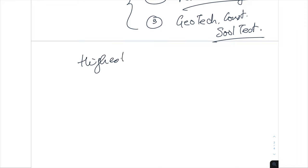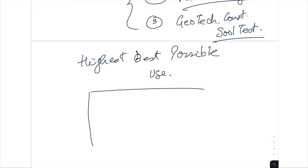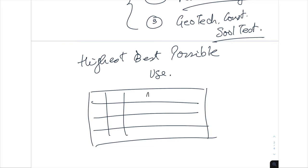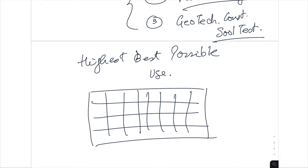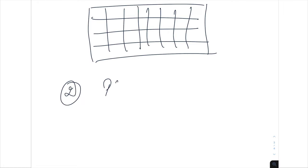The highest, best possible use is basically the maximum number of blocks you can put on this site so that you can maximize your return. The second thing would be, once you've got some sort of conceptual design, you would go through a planning process.